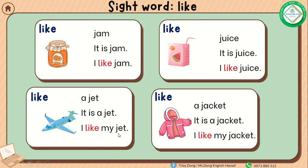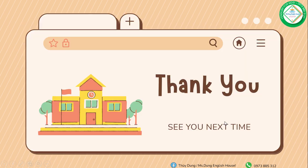A jacket — it is a jacket, I like my jacket. One more time: jam — it is jam, I like jam. Juice — it is juice, I like juice. A jet — it is a jet, I like my jet. A jacket — it is a jacket, I like my jacket.